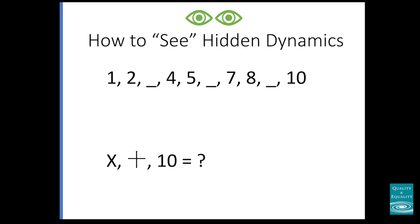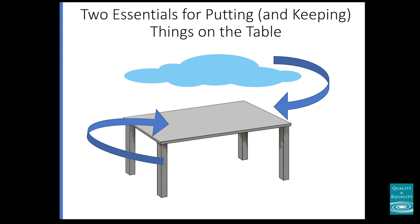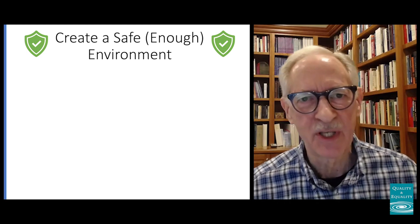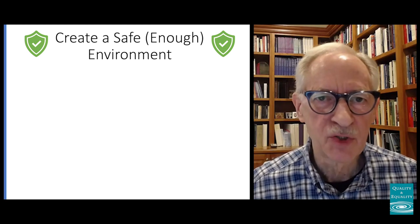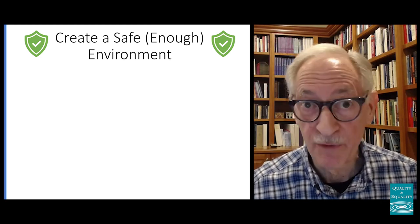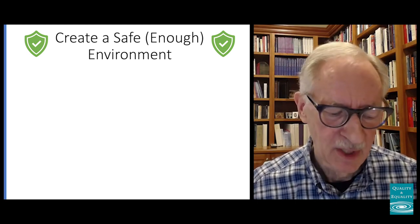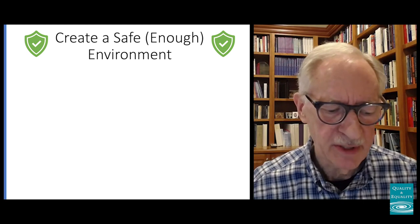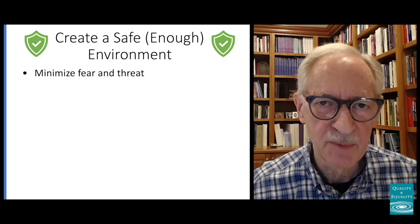Now let's look at another concept. Alright, I've noticed something — how do I get it on the table? This gets complex, but I'm going to simplify and say there are two essential things you need to do. The first is you have to create safety — a safe enough environment. When I say safety, a lot of people think I mean perfect safety. No — I mean safe enough. When you cross the street, you look both ways and make sure it's safe enough to cross. You want it safe enough so that people are willing to engage. Often people hide things because there's a threat, so you need to minimize fear and threat in whatever context you're trying to get something on the table. If there's too much fear and too much threat, it's not going to be discussed.